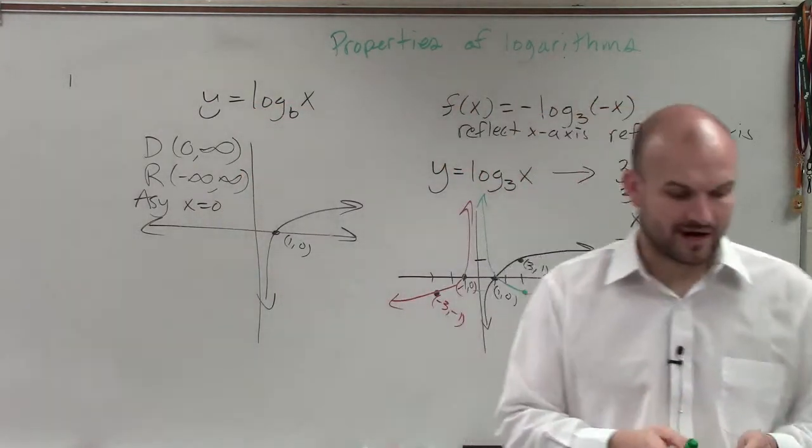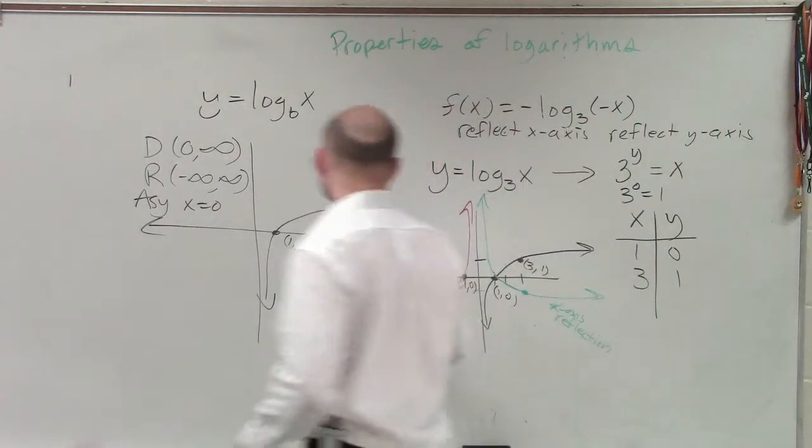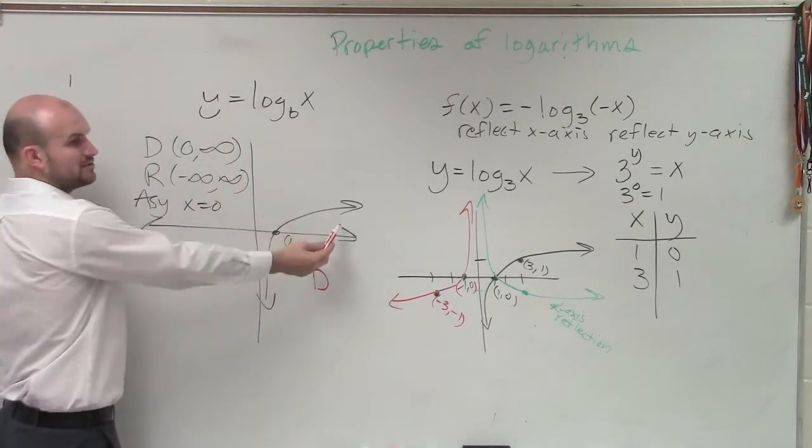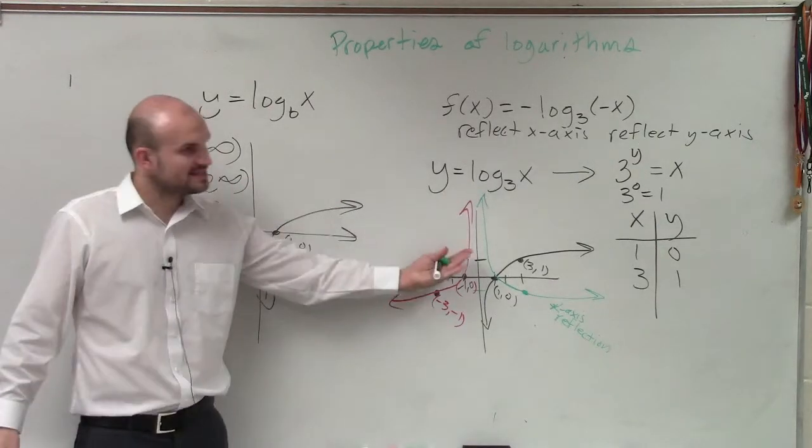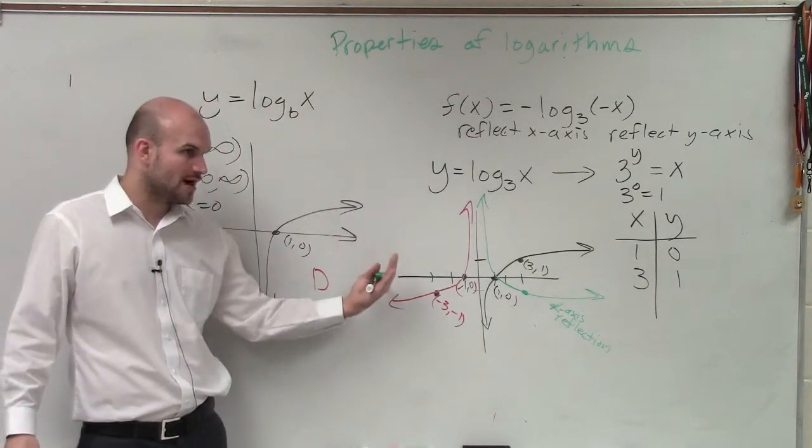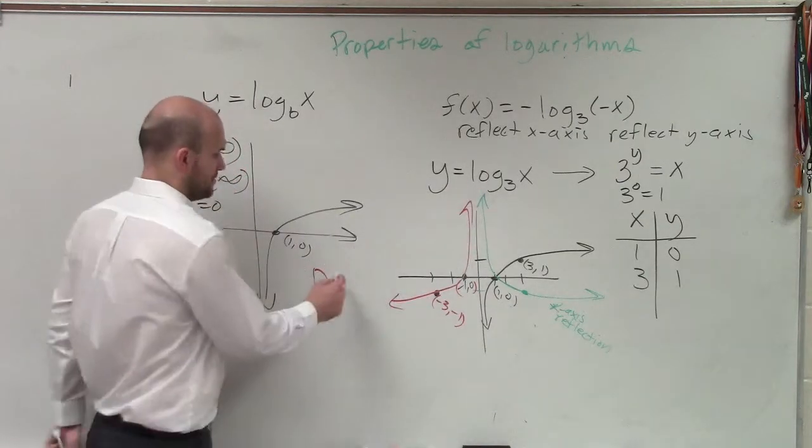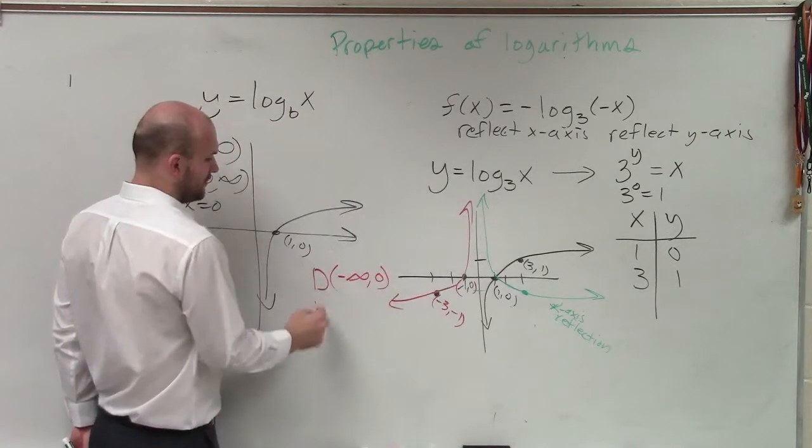Now let's look at the graph and see how the domain and range fit. Well, the domain over here, we said was from 0 to infinity because that's where the graph is. It approaches 0 and goes to infinity. Well, now it's in the second and fourth quadrant, so it goes to negative infinity but only goes to 0.